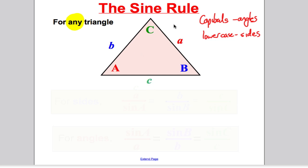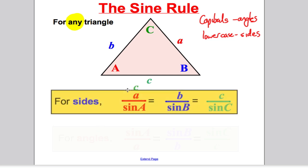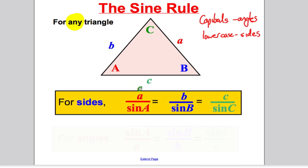Now what the sine rule says — if you want to work out sides — is that if you take a side and divide it by the sine of its opposite angle, you get the same answer as if you do the same for any other side and its opposite angle. So a over sine A equals b over sine B equals c over sine C. You can use this to find missing sides.